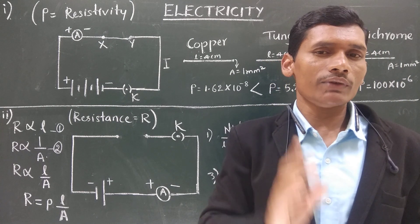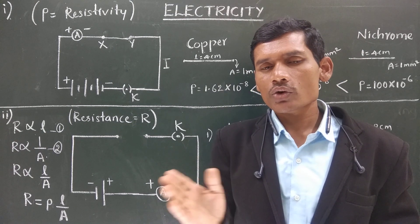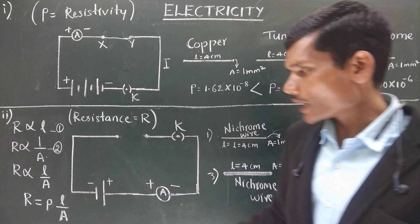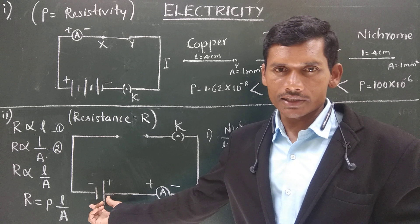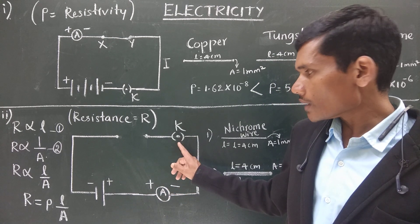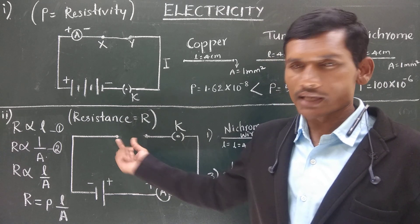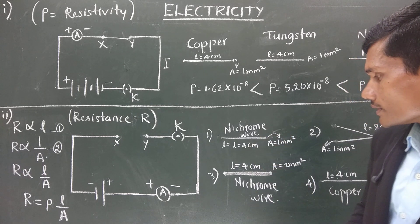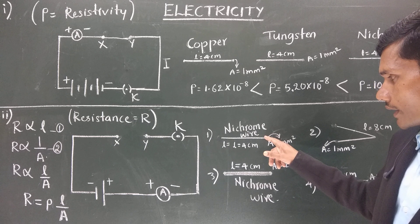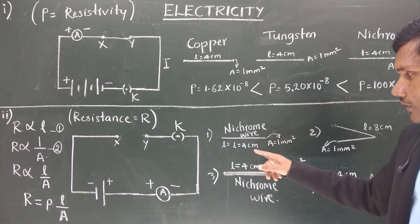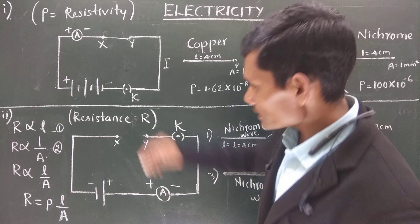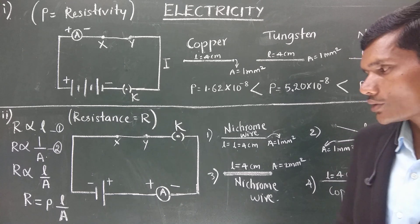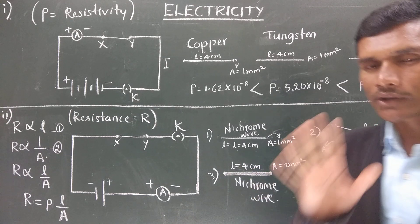Now let us look at a second activity. Another electrical circuit is drawn with a cell, an ammeter connected in series, a plug key, and a gap XY. In this gap we insert different materials. First, we take a nichrome wire of length 4 centimeters and area of cross-section 1 millimeter square, insert it, and measure the current through the ammeter, recording the reading.